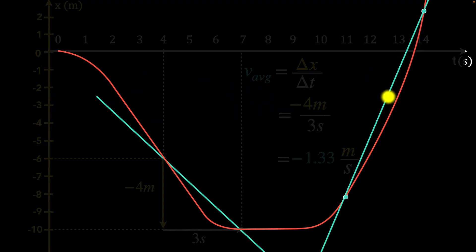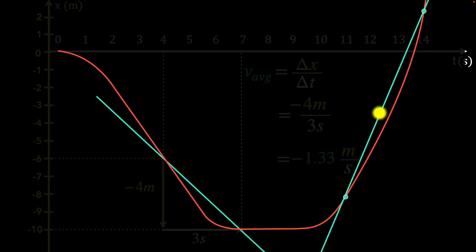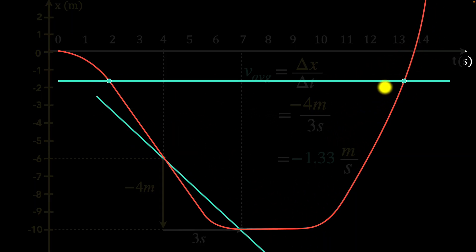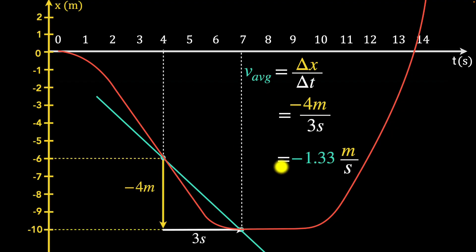In contrast, look at the average velocity between two other points — now we are going uphill, so this is a positive velocity. Its slope is much steeper, so its magnitude must be higher. And between two points where the line is neither sloping down nor up, the average velocity is zero — slope is zero. That's why I absolutely love looking at it geometrically.